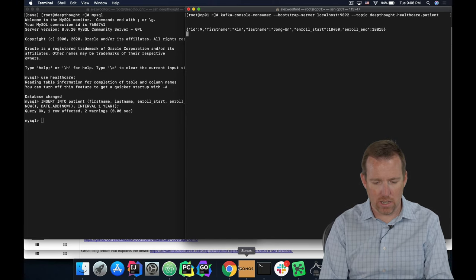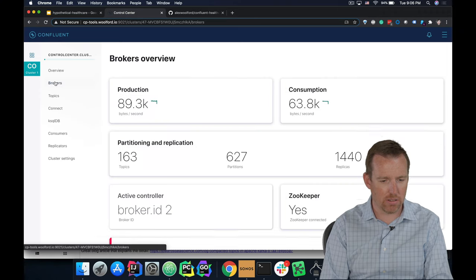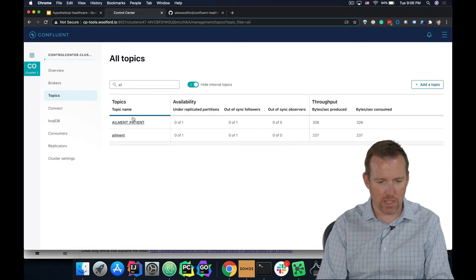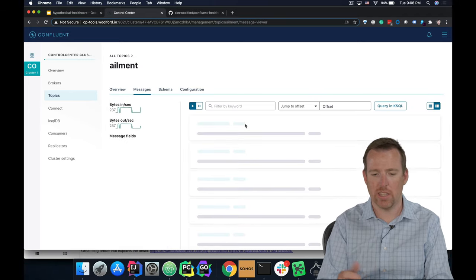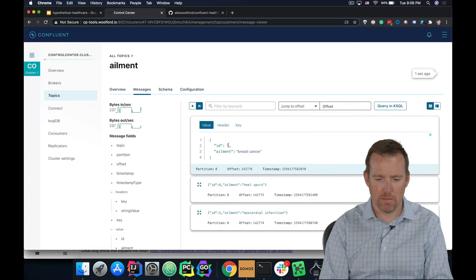So let's go and take a quick look at the topics. So we're going to go to the ailments topic, and you'll see these are being written. So if we go to messages here, you'll see these flow in. So patient number nine got breast cancer, for example. Patient number six got heel spurs.